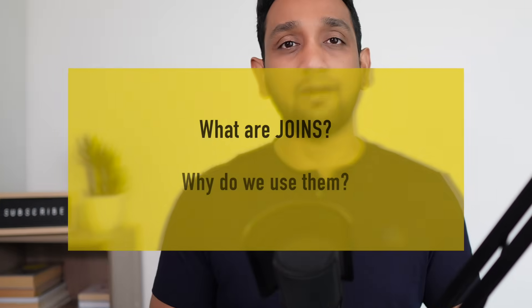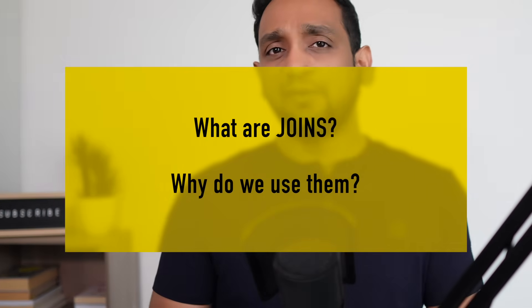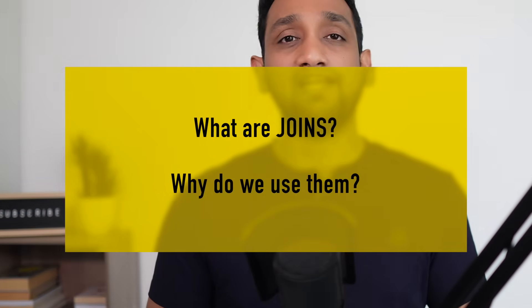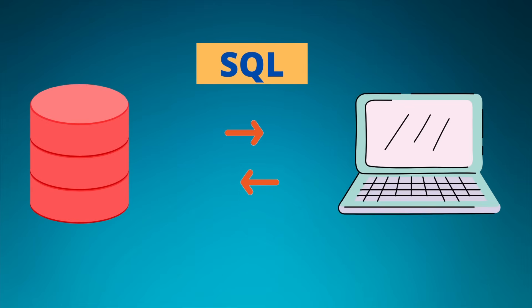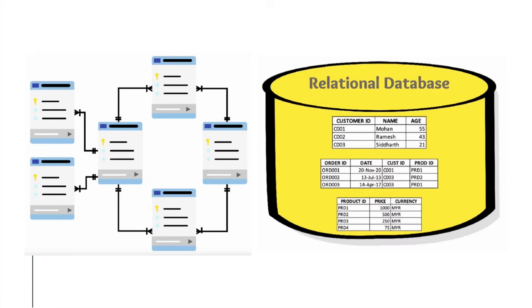Thank you, and let's begin. Before I can talk about different types of joins, let's first try to understand what joins are and why we need them. SQL is a programming language used to interact with relational databases. In a relational database, data is stored across multiple different tables and all of these tables will be related to one another in one way or the other.